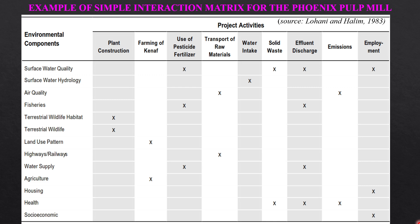This is an example of a simple interaction matrix of a pulp mill. Here you can see that environmental components are in the rows and project activities are in the columns. The project activities that affect the impact are shown by a cross mark.